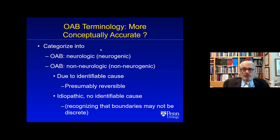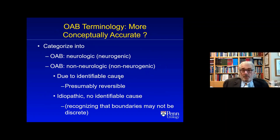Conceptually, it's more logical to think of it this way: OAB can be neurologic — spinal cord injury, multiple sclerosis, Parkinson's, etc. — or non-neurologic. If non-neurologic, you can divide it into cases due to an identifiable cause like UTI or stone, which are presumably reversible, and those without an identifiable cause, which are idiopathic. There may not always be discrete boundaries, but the treatment of the symptoms of overactive bladder is the same.